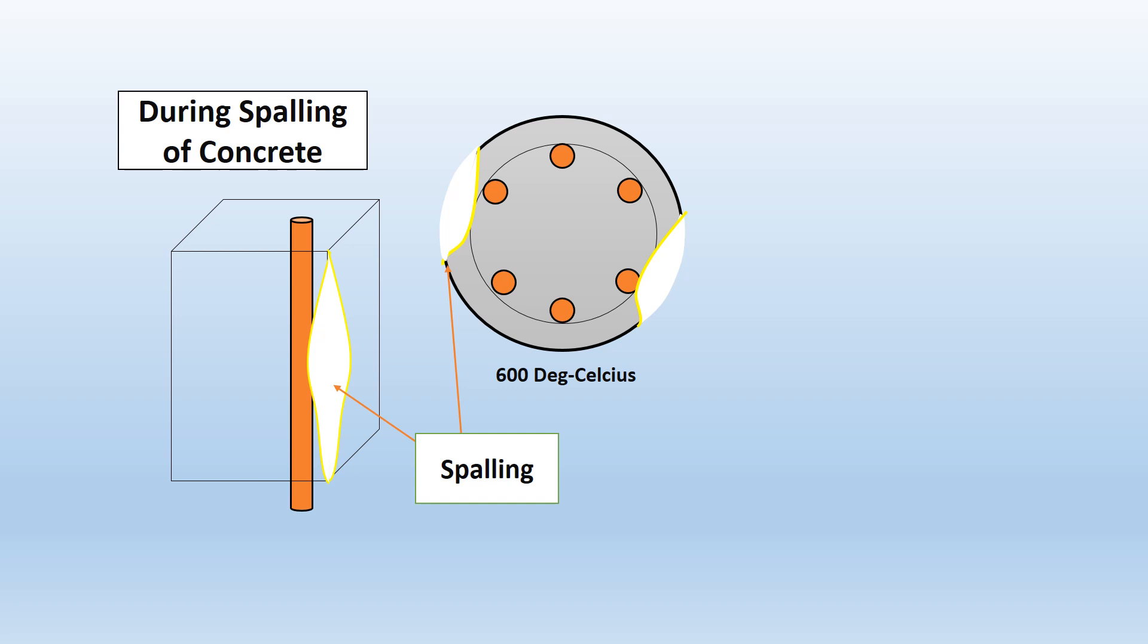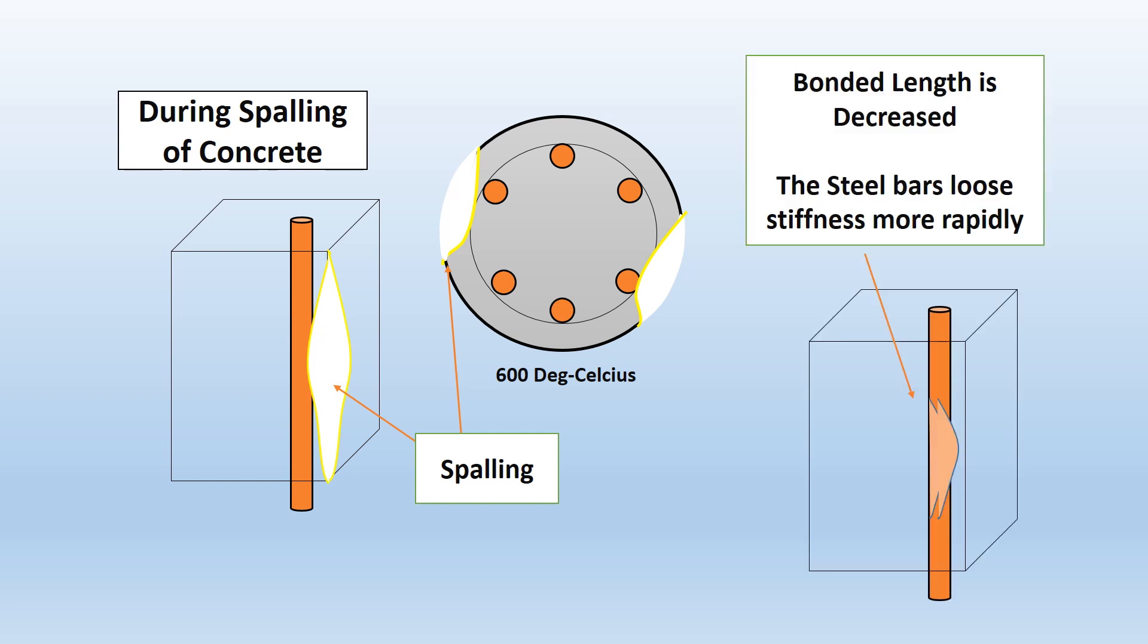This is the thermal spalling of concrete. This occurs around 600 degrees Celsius. The steel is exposed and the bond length is decreased. Thereby there is a loss in the steel grip which leads to the loss in the stiffness of the bars and there is an increase in the bond slip.